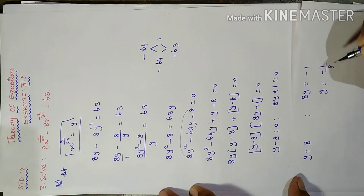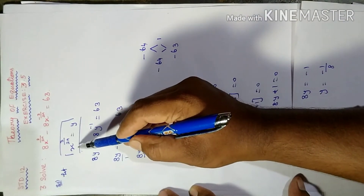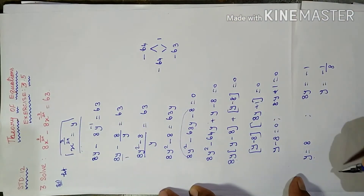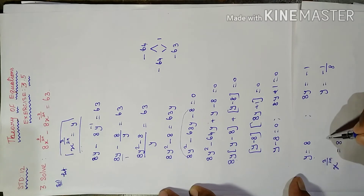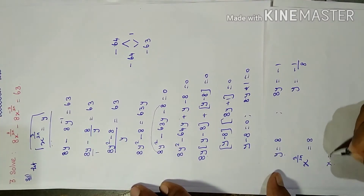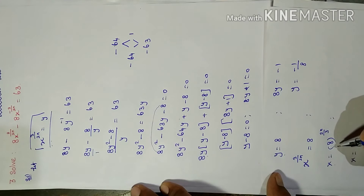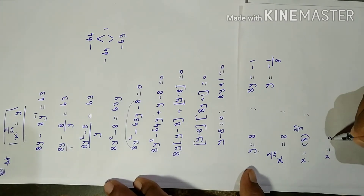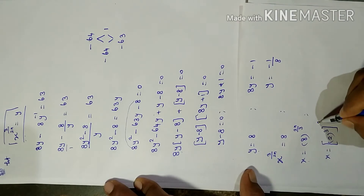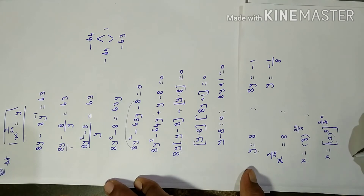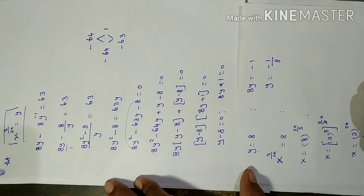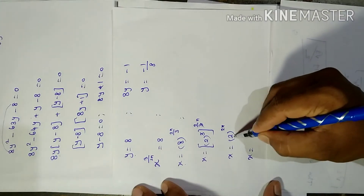Applying y equal to 8: x power 3 by 2n equal to 8 equal to 2 power 3. Therefore x equal to 2 power 3 whole power 2n by 3. The 3 cancels, so x equal to 2 power 2n, which equals 4 power n.